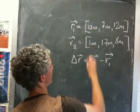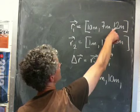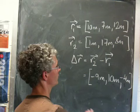So first of all we do the x-component: 1 minus 10 metres is minus 9 metres. 17 metres minus 7 metres is 10 metres—that's the y-component. And finally, 8 metres minus 12 metres is minus 4 metres.